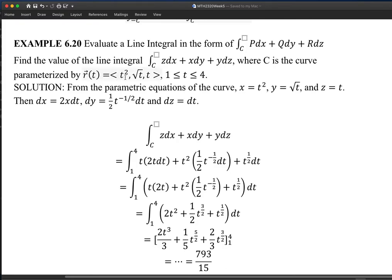t squared, or the vector equation form, t squared, square root of t, t. And t is running from 1 to 4.